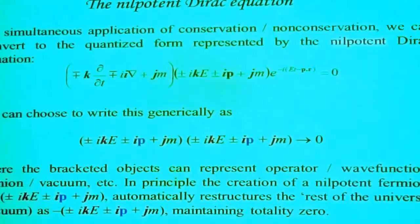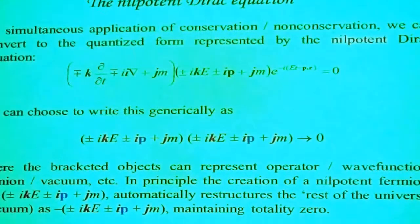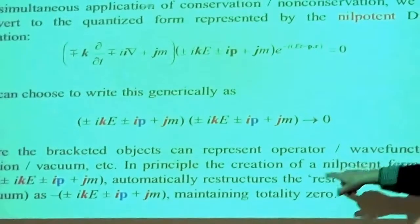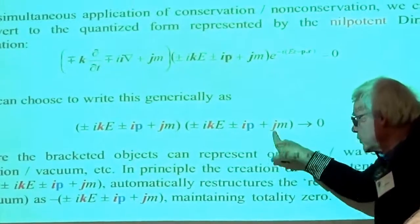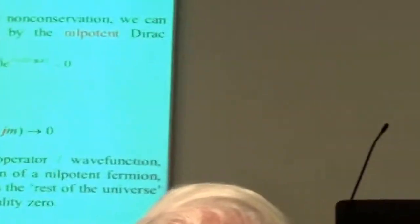If we create a nilpotent fermion — a fundamental particle that's nilpotent, that squares itself to zero — and if the universe is a total zero, you're automatically saying that that fermion plus the rest of the universe is zero. So the rest of the universe is a negative version of this structure, to maintain totality zero. It also squares itself to zero. So the particle and the rest of the universe — which is needed to create that particle — add up to zero and multiply to zero.